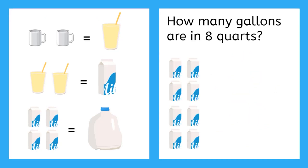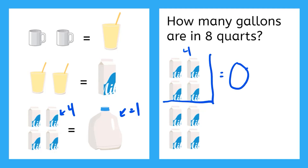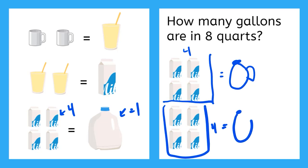How many gallons are in eight quarts? Remember, four quarts is equal to one gallon. So if I count one, two, three, four — here's four quarts, and those are equal to one gallon of milk. Then I have another four, so that is equal to another gallon. So eight quarts is equal to two gallons.